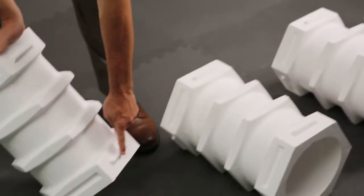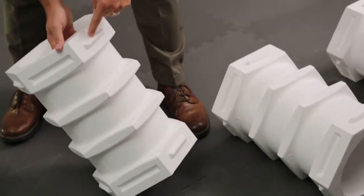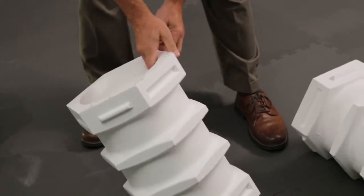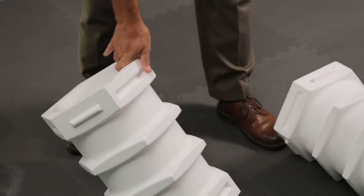The first thing you notice on these blocks is that they have a series of tabs and slots all around the six sides. The purpose for them is to interlock with each other.